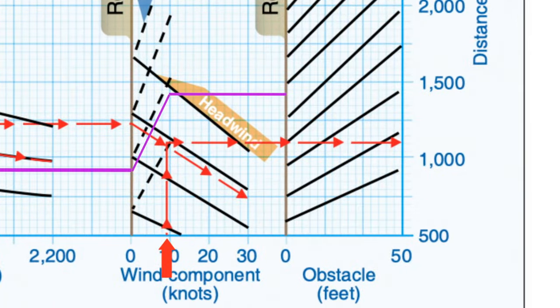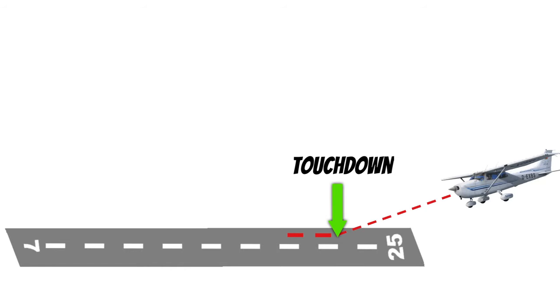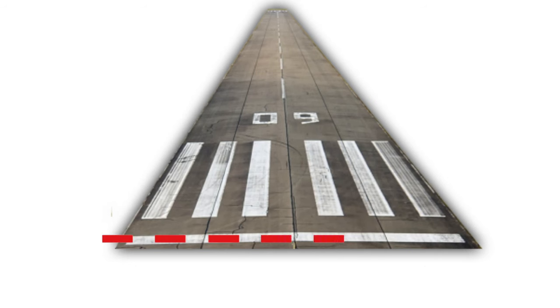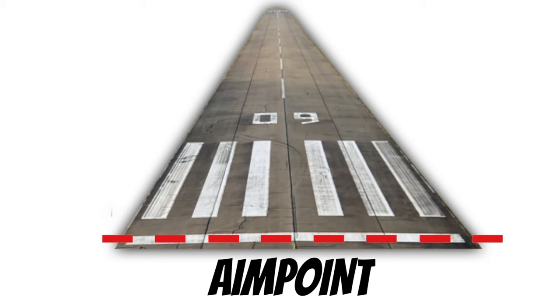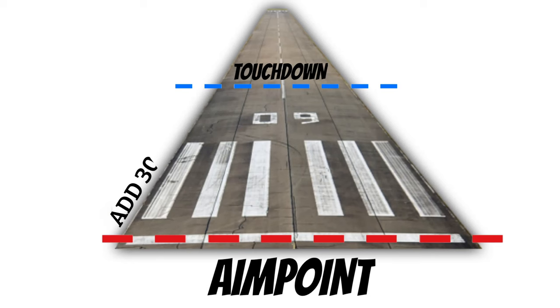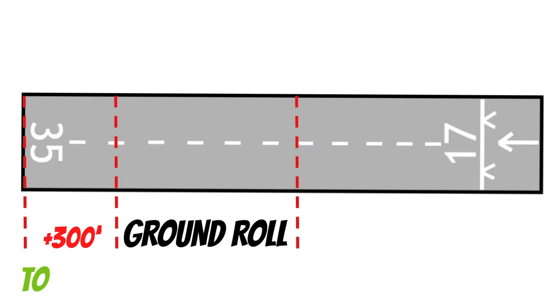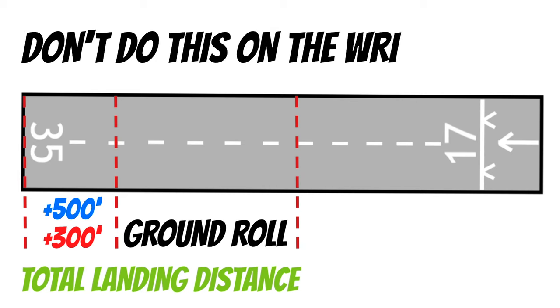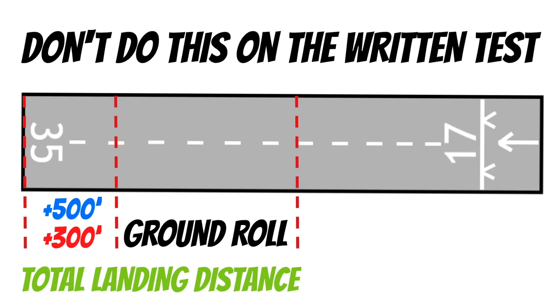Now you can see there's an obstacle section on this chart as well, because obstacles can affect our landing distance too. If we're not landing over an obstacle, we move straight across and it looks like we need 1,470 feet of ground roll. Notice they use the term ground roll instead of landing distance — that's very important. Ground roll means the distance after you touch down until your stopping point. It does not include the runway length you cover during the roundout and flare. I like to use the threshold as my aim point when landing on a short runway. I'll typically add 300 feet to my ground roll to account for that and give me a total landing distance.